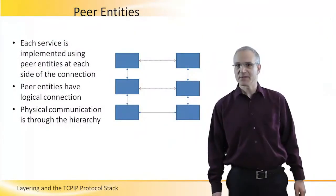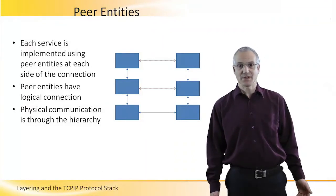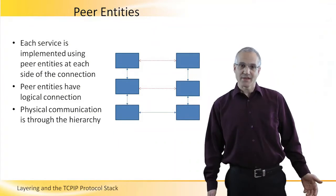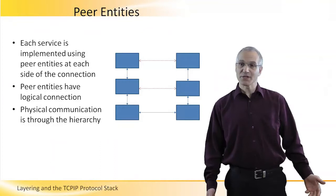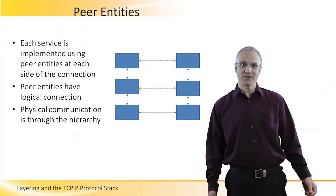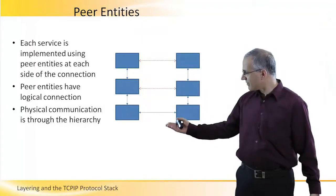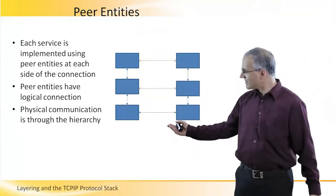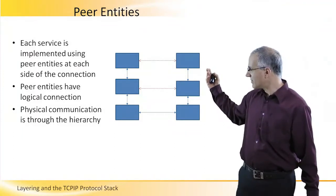Each service is implemented using software that resides in both ends of a connection. These are called peer entities. Each peer entity is talking to the other one using some logical connection, but not a physical one. The physical connection is going through the stack of services, from the upper one down to the lower one, then crossing the physical layer, and back up to the entity we talked about.